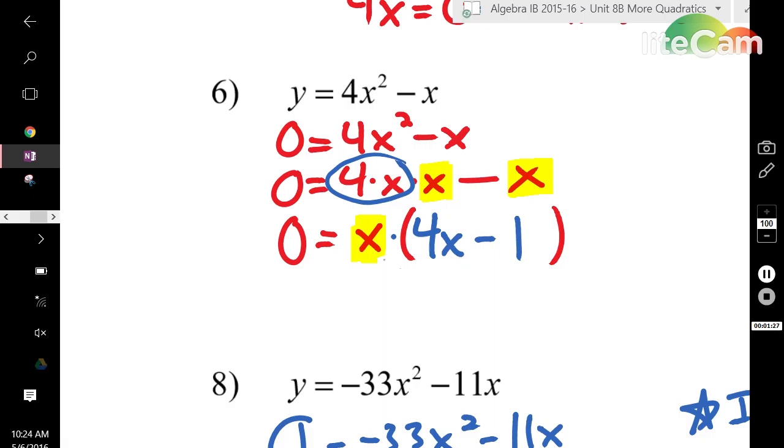Now, you have two factors multiplying to a product of zero. And the only way you can have that happen is if one or both factors are zero. So, we're going to assume and plan for that both of them are equal to zero. So, first factor, x equals zero. And second factor, 4x minus 1 equals zero. Now, the first one I don't have to solve because x is already by itself. The second one we do have to solve.